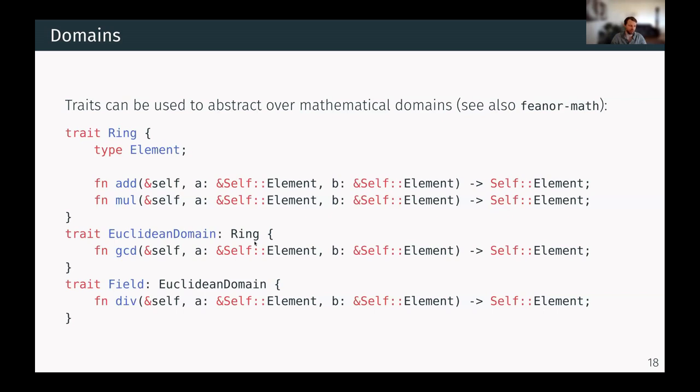Then we have fields that have division and inversion and all fields are Euclidean domains. As you can see with this, with traits, we can very nicely capture these mathematical patterns.